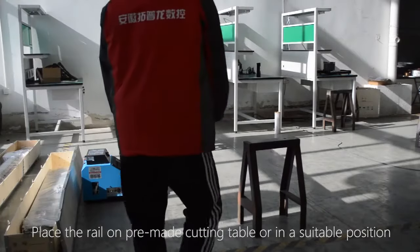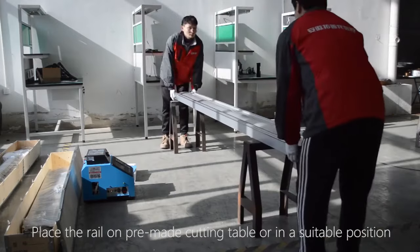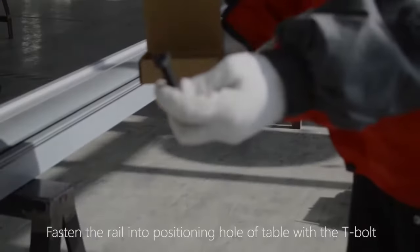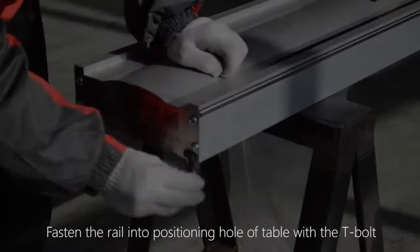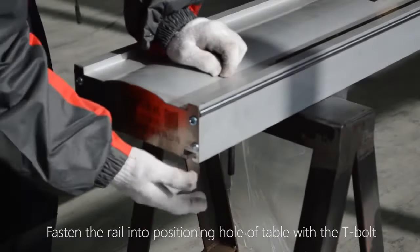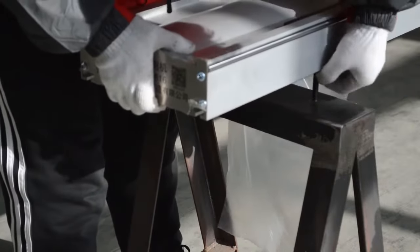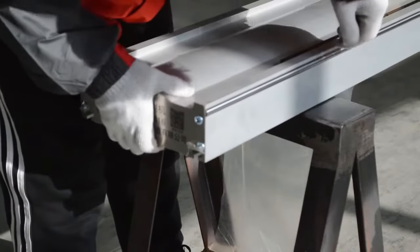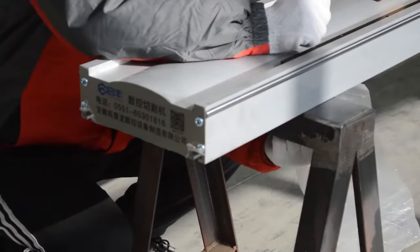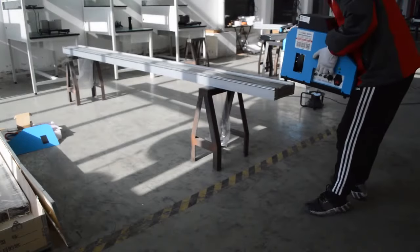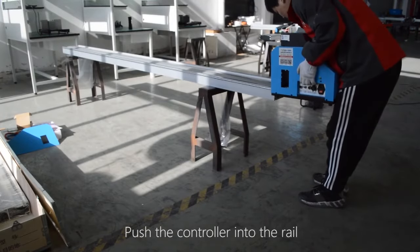Place the rail on pre-made cutting table or in a suitable position. Fasten the rail into positioning hole of table with the T-bolt. Push the controller into the rail.